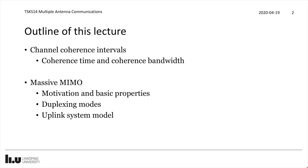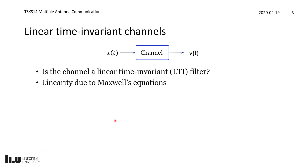Welcome to lecture number six in multiple antenna communications at Linköping University. In this lecture I will introduce two important concepts: the channel coherence interval — particularly the coherence time and the coherence bandwidth — then the concept of massive MIMO with its basic motivation and properties. I will also cover different duplexing modes and revisit the uplink system model from the previous lecture with details on parameter values.